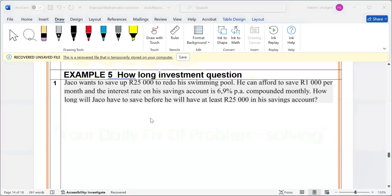If we look at this, Jacob wants to save $25,000 to redo his swimming pool. He can afford to save $1,000 per month. The interest rate on his savings account is 6.9% per annum compounded monthly. How long will it take Jacob to save before he will have at least $25,000 in his savings account?